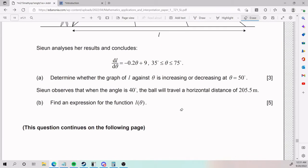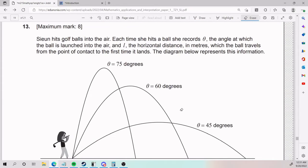Number 13, last but not least. If I'm not mistaken, we have Sion hits golf balls into the air. Each time she hits a ball, she records θ, the angle at which the ball is launched into the air.